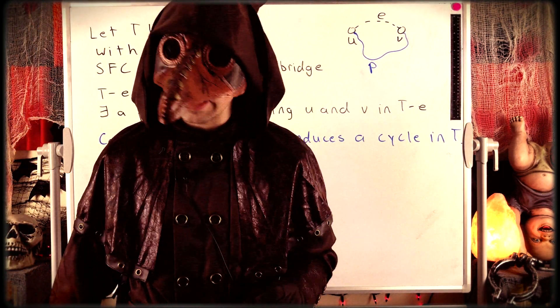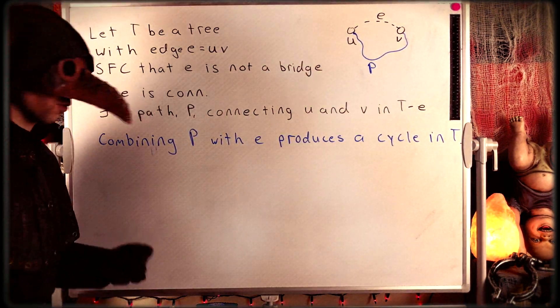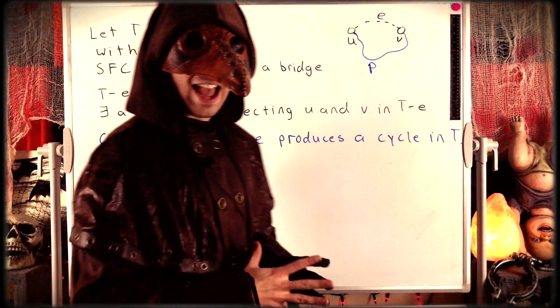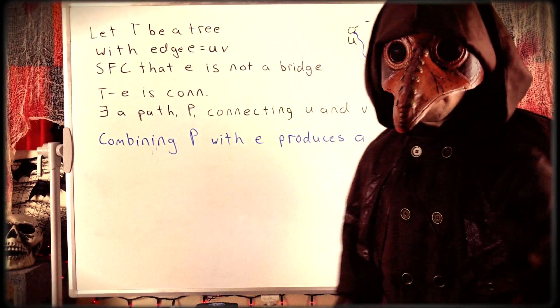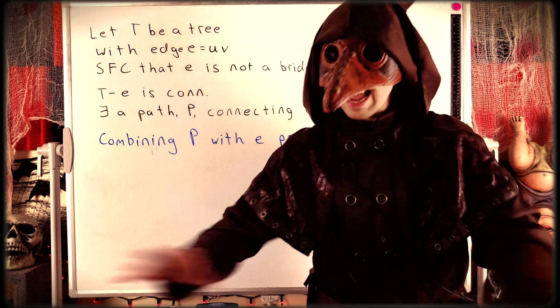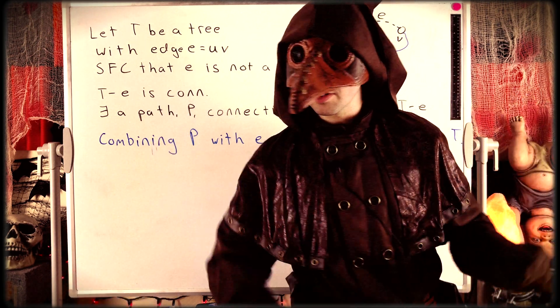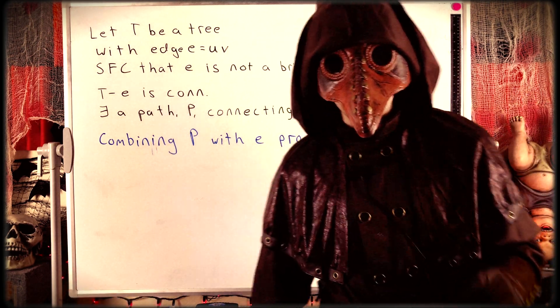E has to be a bridge to avoid this contradiction. And thus, every edge of every tree graph must be a bridge. If you delete any edge from a tree graph, the resulting graph will be disconnected.